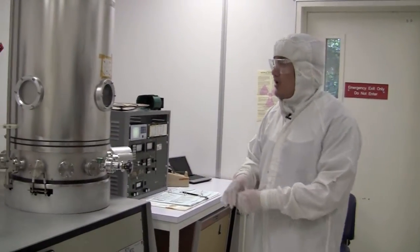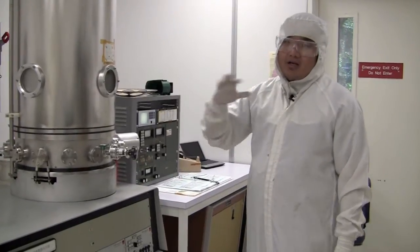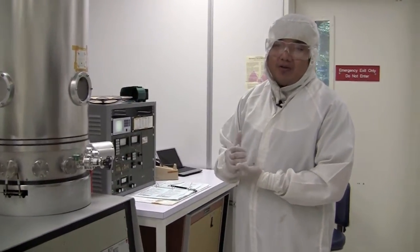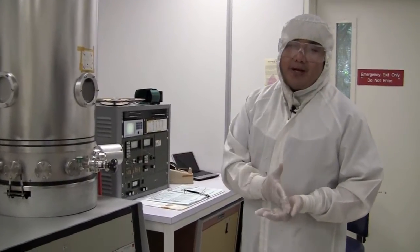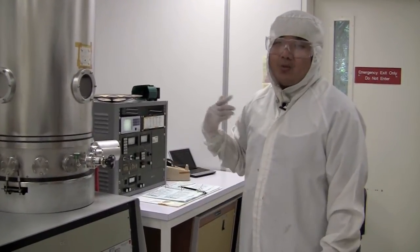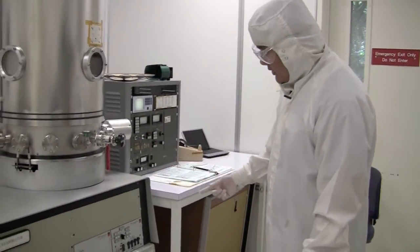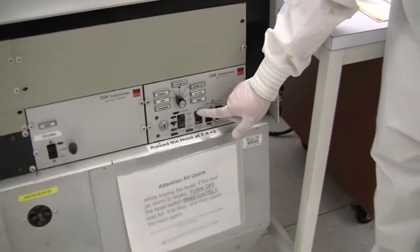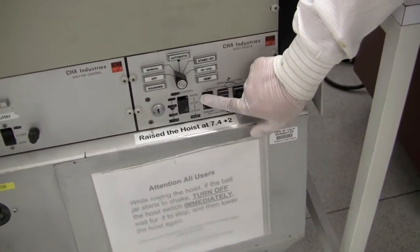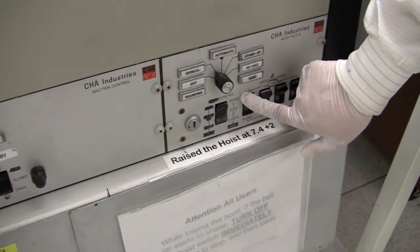So now that we've closed the chamber and our samples are in there and our crucible is there and the shutter is closed, we can begin the pump down process. Right now the system is in normal atmosphere, so we want to bring it down to high vacuum but we can't just jump there, so we need to rough it with the mechanical pump. So the first thing we're going to do is turn the mechanical pump on, which is called roughing. There's a roughing valve here.